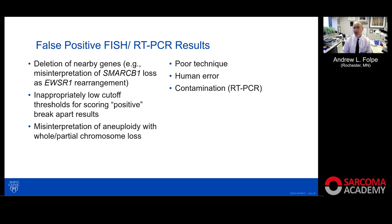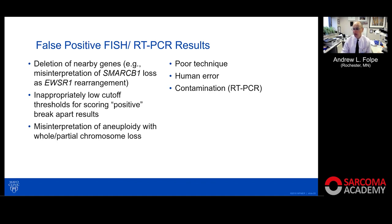Why do you get false positives with FISH and occasionally with RT-PCR? With FISH, you can have deletion of nearby genes — for example, tumors with loss of SMARCB1 are not uncommonly misinterpreted as showing EWSR1 rearrangement. Labs can have inappropriately low cutoff thresholds for scoring positive, or misinterpret aneuploidy for polar chromosome loss. A lot of melanomas are sent in as showing EWSR1 rearrangements and therefore representing clear cell sarcomas because labs can't distinguish aneuploidy from actual rearrangement.